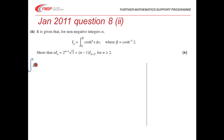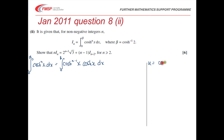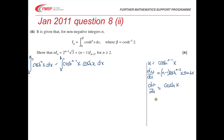The trick to integrating cosh to the power of n of x is to write it as cosh to the n minus 1 of x times cosh x, and then integrate by parts, both from 0 to beta. So we set u equals cosh to the n minus 1 of x, giving du/dx equals (n minus 1) cosh to the n minus 2 of x times sinh x. Then dv/dx equals cosh x, so v equals sinh x.